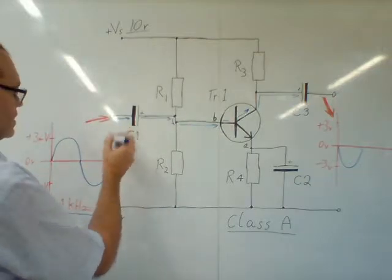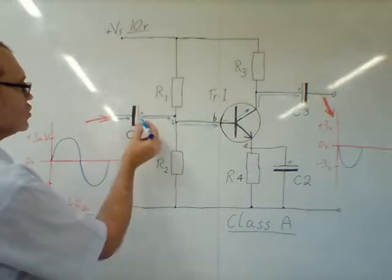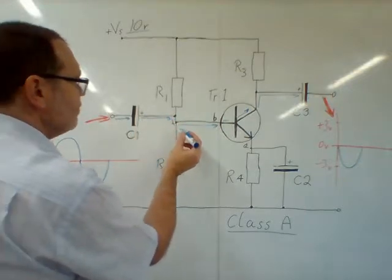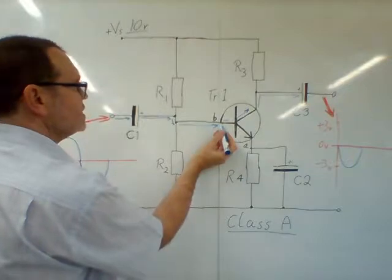We pass that as a change in voltage. It passes through the capacitor and via the potential divider it goes on to the base of the transistor.